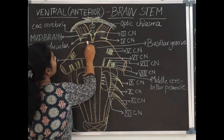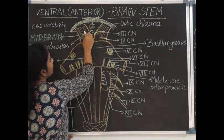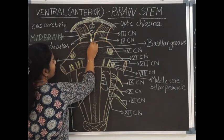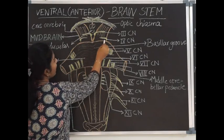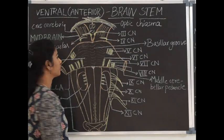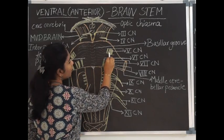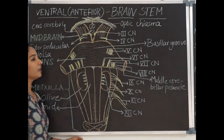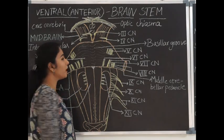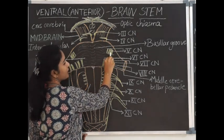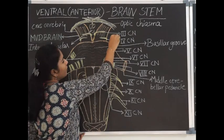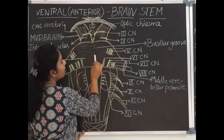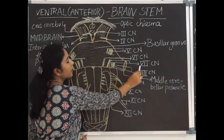The upper border of the pons separates it from the midbrain by means of the crus cerebri. The nerve getting origin from the pons is the 5th cranial nerve, the trigeminal nerve, which has two parts — a smaller motor part and a larger sensory part. A vertical line drawn lateral to the sensory part demarcates the pons from the middle cerebellar peduncle.